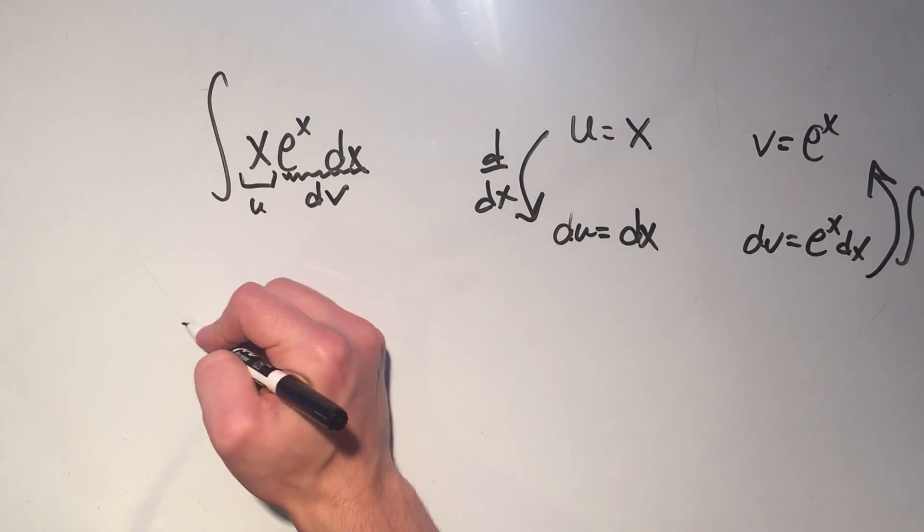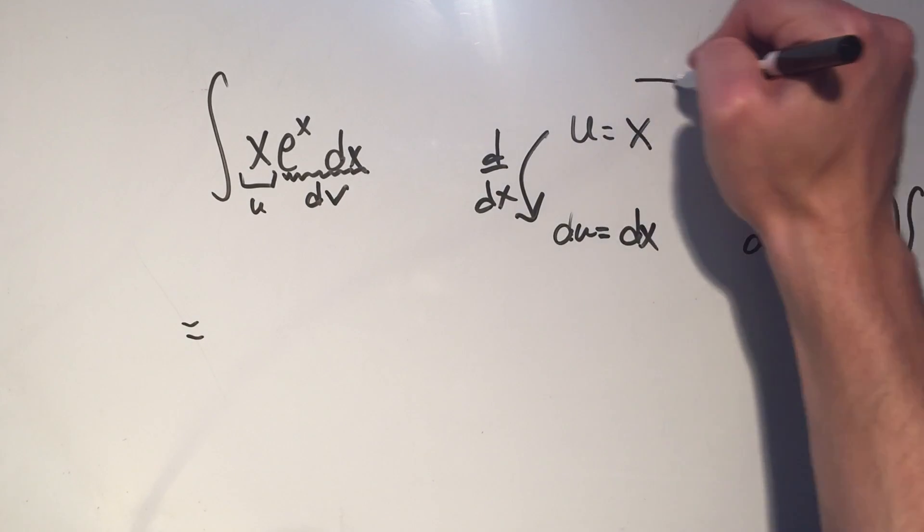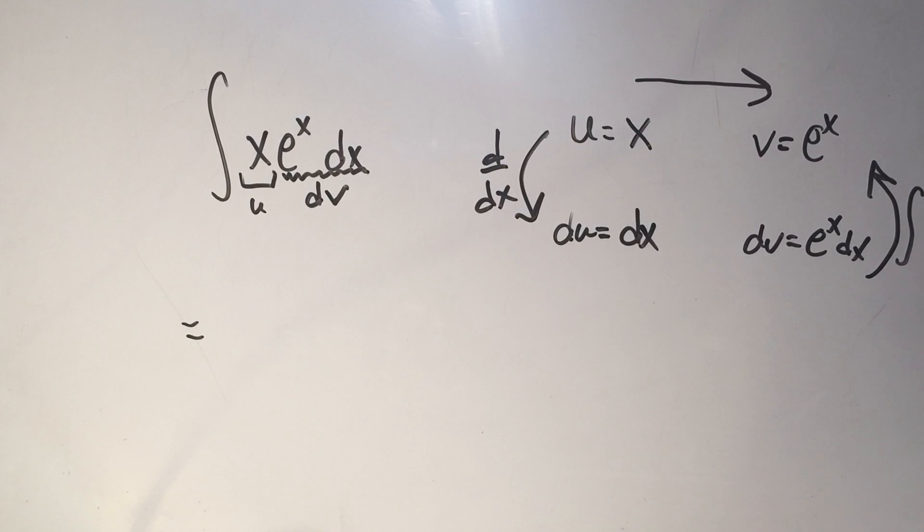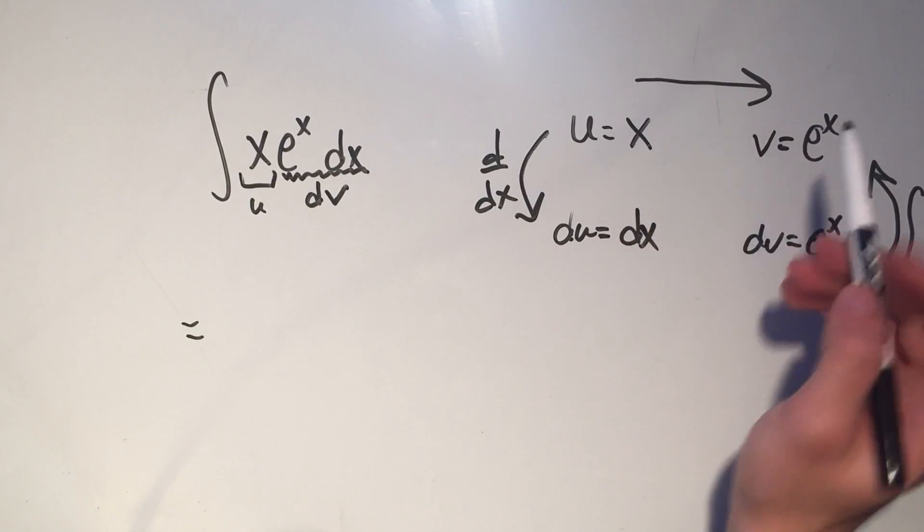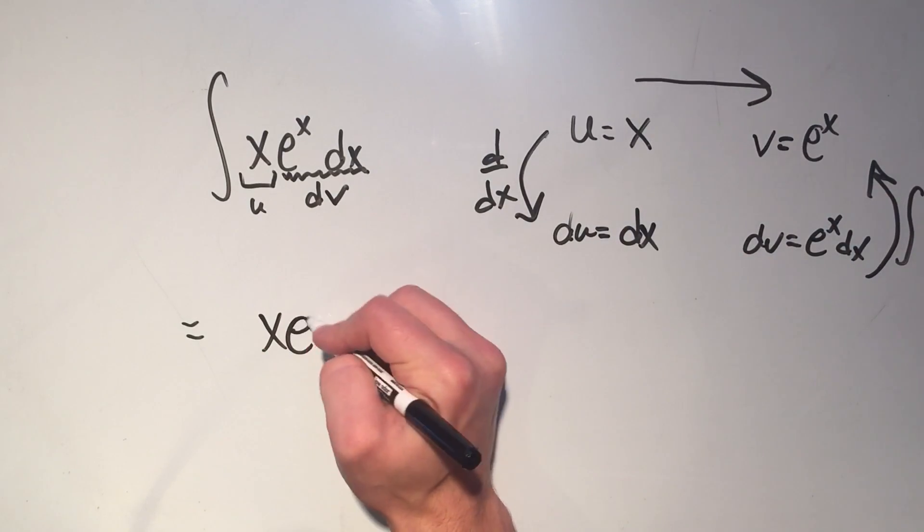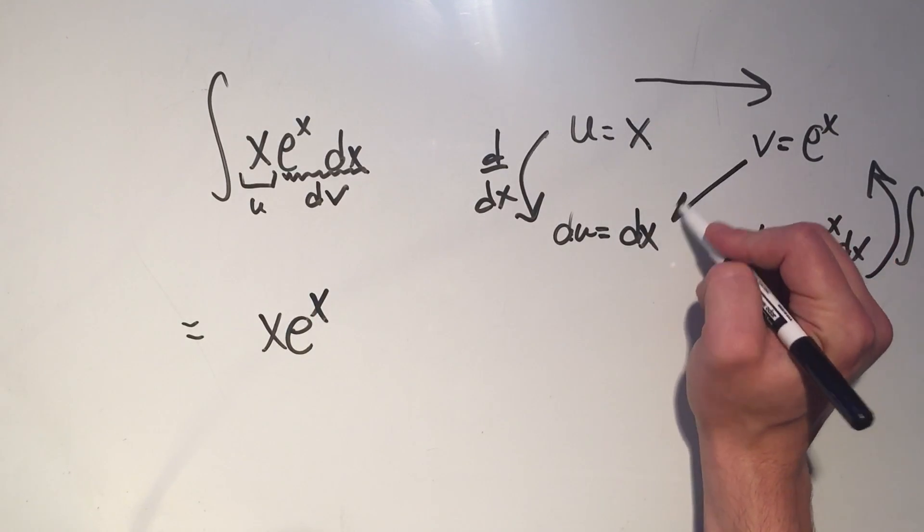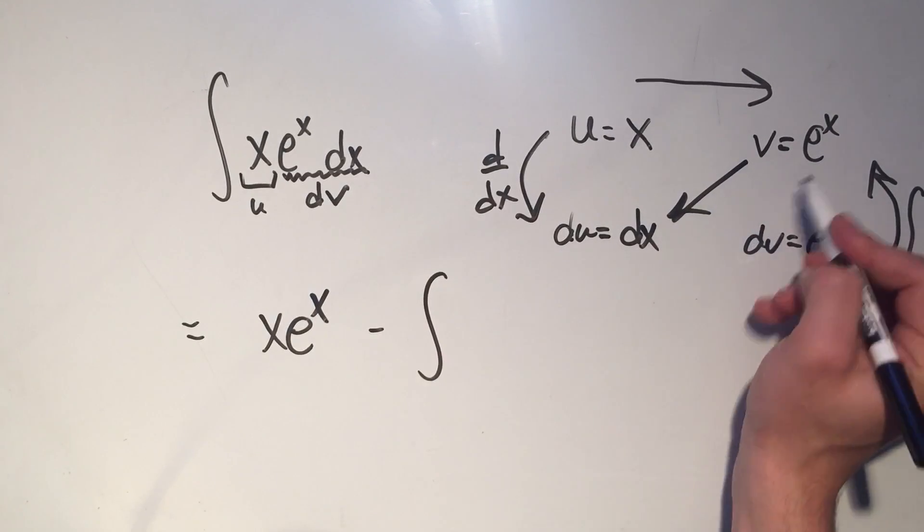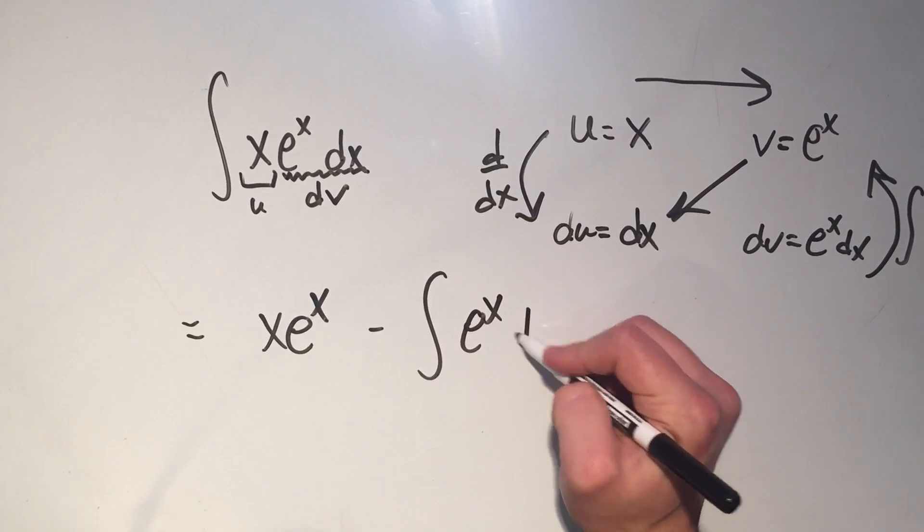And now I follow my integration by parts formula. It's uv, and I like to draw these arrows, some people don't, some people do, some people switch the order of u's or v and dv here, but it doesn't really matter. The formula says uv, so that's x e to the x minus the integral of v du.